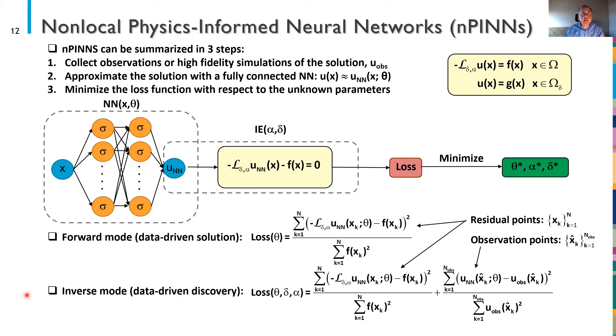So how do nPINNs work? You can summarize it in three steps. We'll collect observations or high fidelity simulations of the solution at set points. We'll approximate the solution with this fully connected neural network and I'll minimize the loss function with respect to the unknown parameters. So in other words we'll try to learn if α and δ aren't known we'll try to learn those and also train the neural network. In a data-driven solution mode it ends up being reasonable just to minimize against the residual for the PDE at some set of residual points. If we're trying to do data-driven discovery that is maybe learn the parameters α and δ having some observation points in practice it turns out does help. The number of points for each don't have to be the same but this is a cartoon hopefully that explains how an nPINN works.